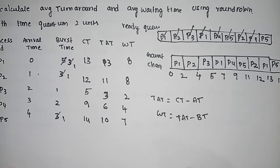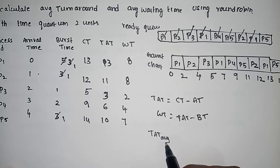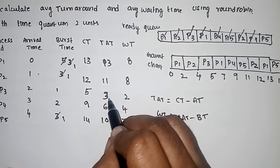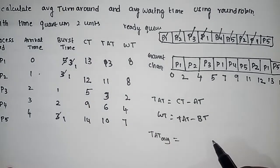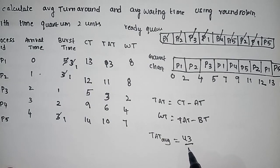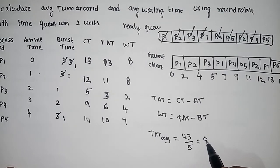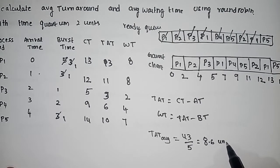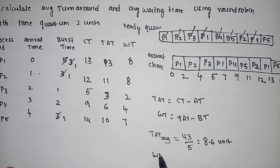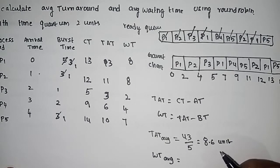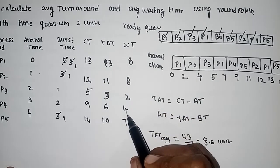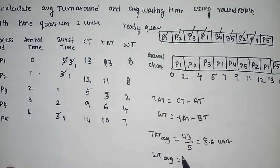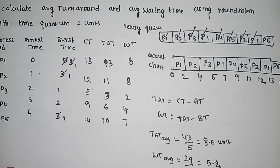Average turnaround time calculation: 13 plus 7 is 24, plus 3 is 27, plus 6 is 33, plus 10 is 43, divided by 5 equals 8.6 units. Average waiting time: 8 plus 8 is 16, plus 2 is 18, plus 4 is 22, plus 7 is 29, divided by 5 equals 5.8 units.